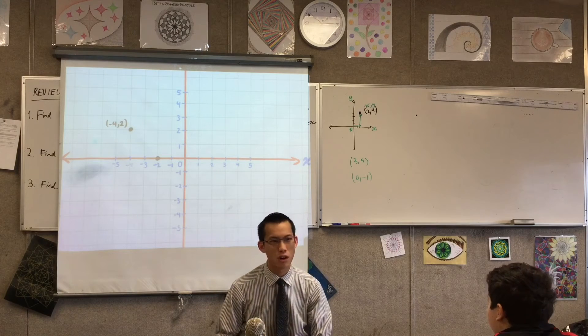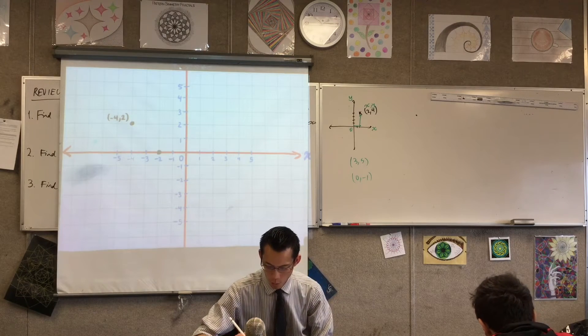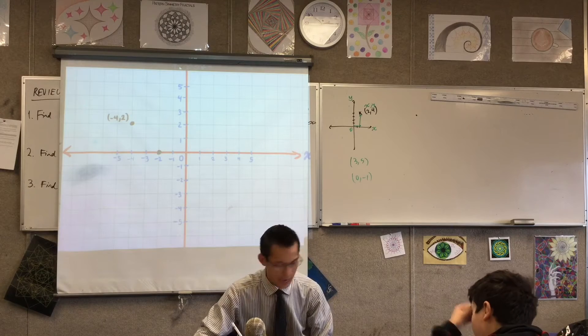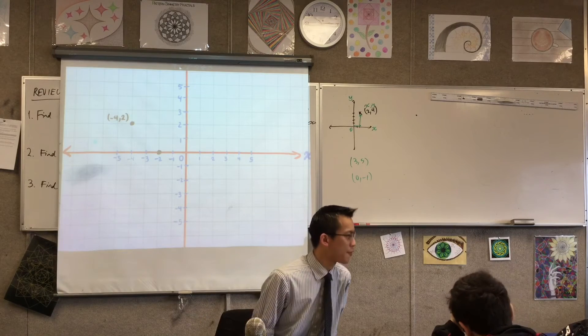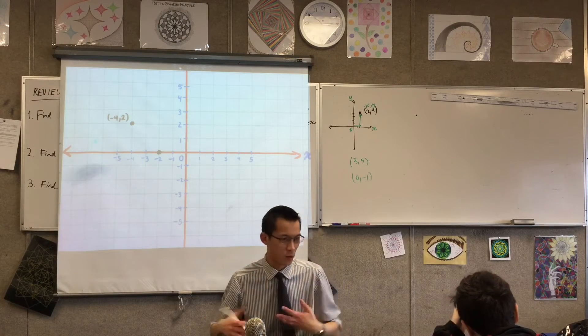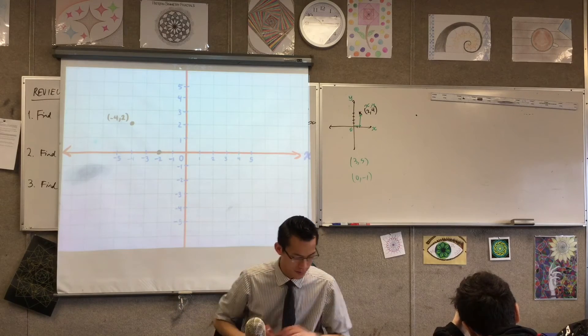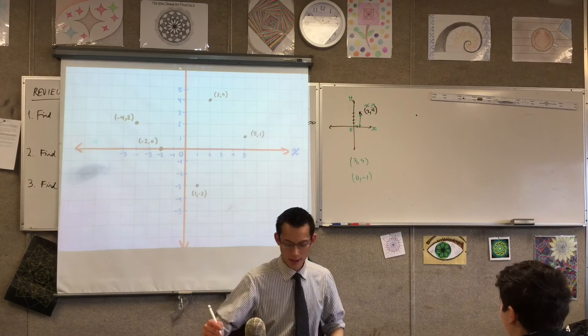And you can do the rest of them: 1 comma negative 3. Actually, can I give you like half a minute? Just finish off the last three points and then I will draw them and you can check if you've got them right. Okay, go ahead and draw them.